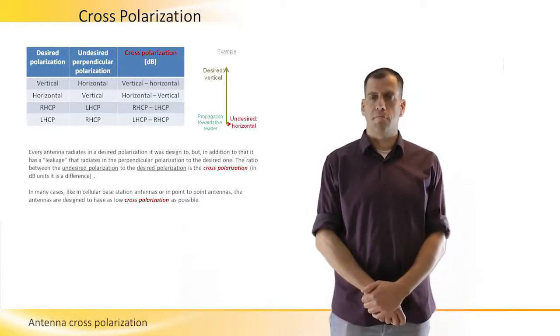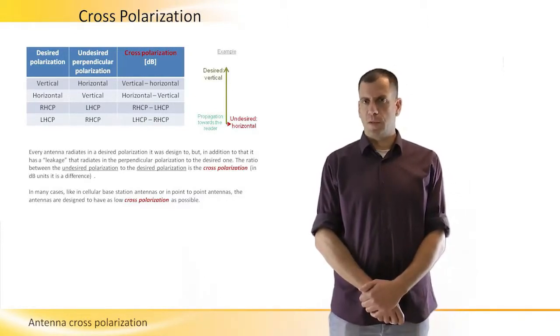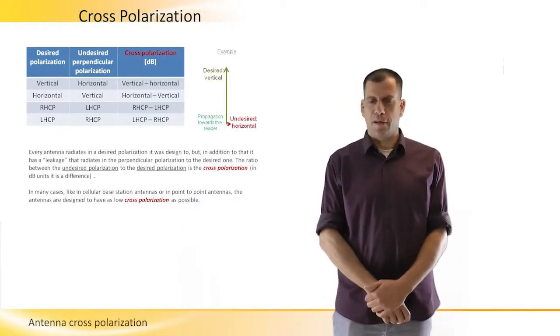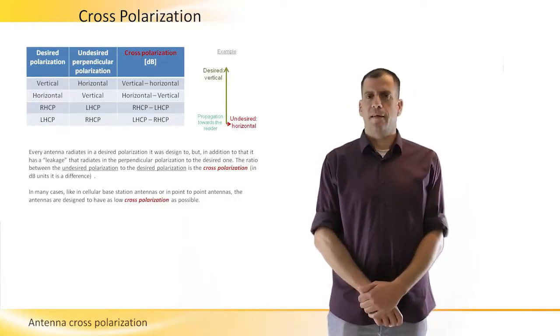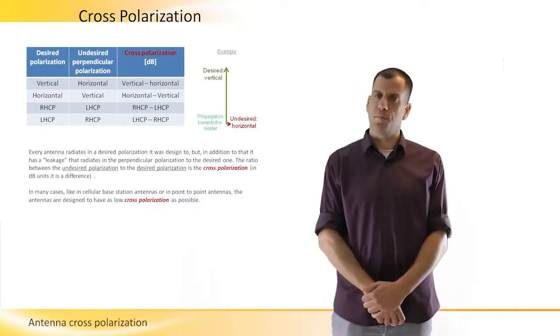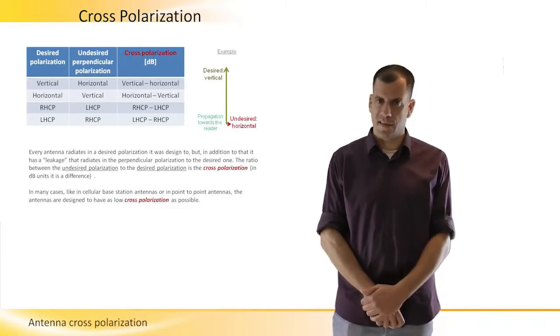The cross-polarization would be 20 dBi or minus 20 dBi, depends how you define it. And again, it is the ratio between the peak level of the cross-polarization or radiation to the peak level of the co-polarization, the one that we are interested in.